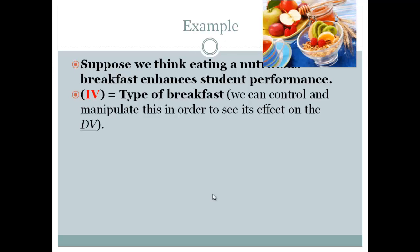So the IV, the independent variable in this question, this research question, is the type of breakfast. Now we can control the independent variable. We can control whether subjects get the nutritious breakfast or not. And then we can see its effect on the test scores.